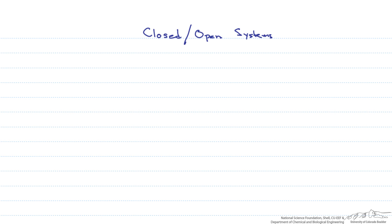In this screencast we talk about energy balances and the differences between closed and open systems. A closed system is one where mass does not cross the boundary between the system and the surroundings.